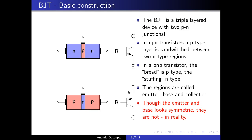The direction of the arrow is actually important. The arrow tells you the direction in which conventional current would flow preferably. In an NPN transistor the base is P-type, and current would flow from P to N, which is why the arrow points outward toward the emitter lead. In the PNP transistor, the current would flow from emitter to base — from P to N — so that is why the arrow points toward the base.